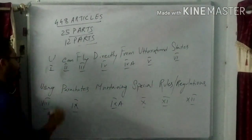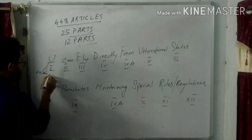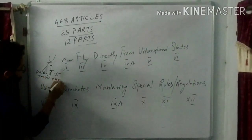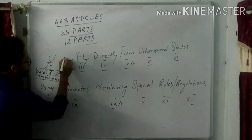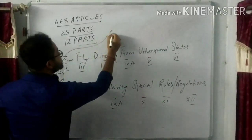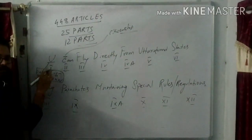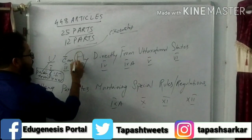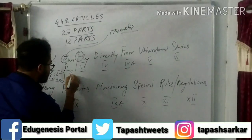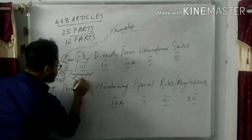What does each part denote? The U here stands for Union, meaning Union and its territories. C stands for Citizenship. Part 2 tells about citizenship. And F stands for Fundamental Rights. Part 3 covers fundamental rights.